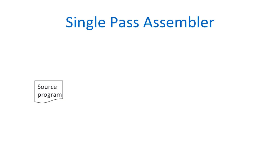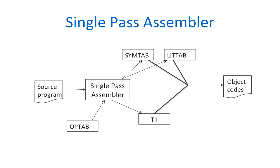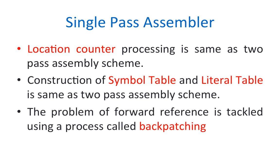The source program, when given as input to the single pass assembler, which also takes the opcode table, results in a symbol table, literal table, and table of incomplete instructions, and which results in the object code or machine code. Processing of the location counter, construction of symbol table and literal table is same as the two pass assembly scheme, and the problem of forward reference is tackled using a process called backpatching.